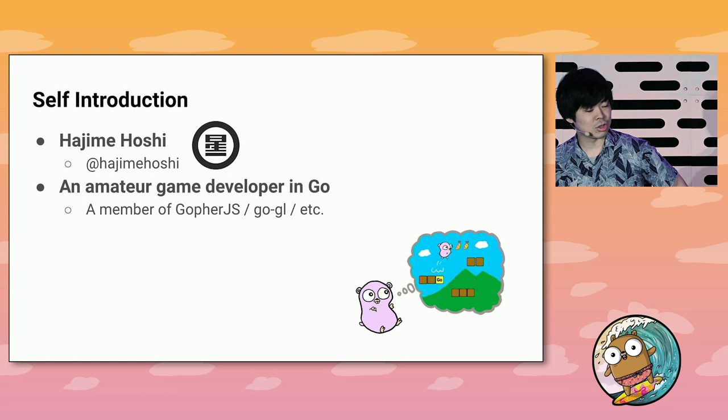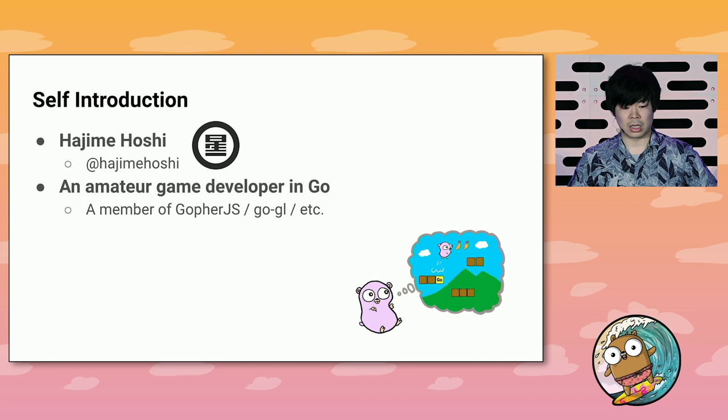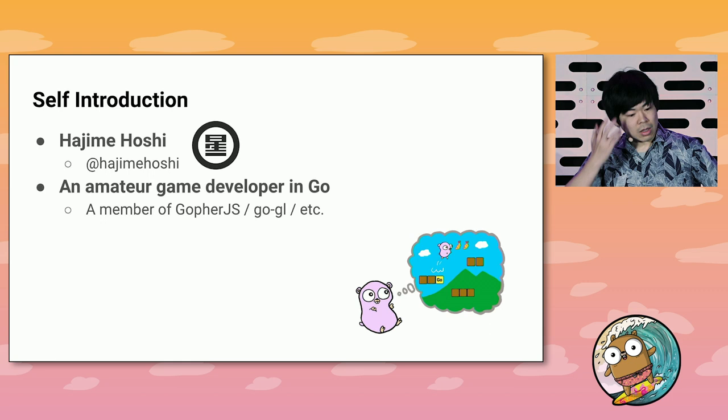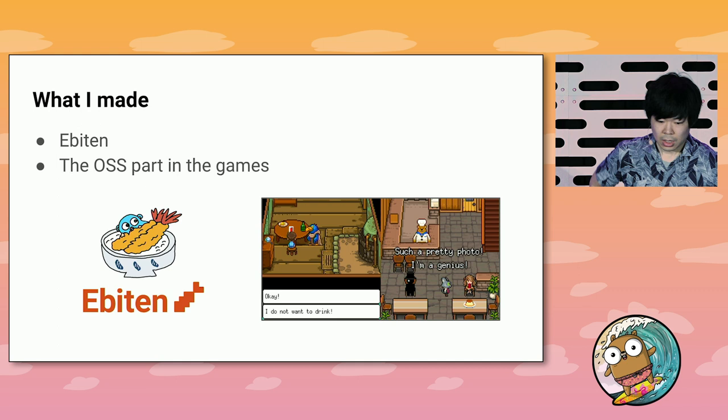Let me introduce myself. I'm Hajime Hoshi from Tokyo. I'm an amateur game developer in Go. I'm also a member of Gopher.js, which is a transpiler from Go to JavaScript, and GoGL, which is an OpenGL binding in Go. I have developed EBITEN, which is a very simple 2D game library, and I also developed open-source games.